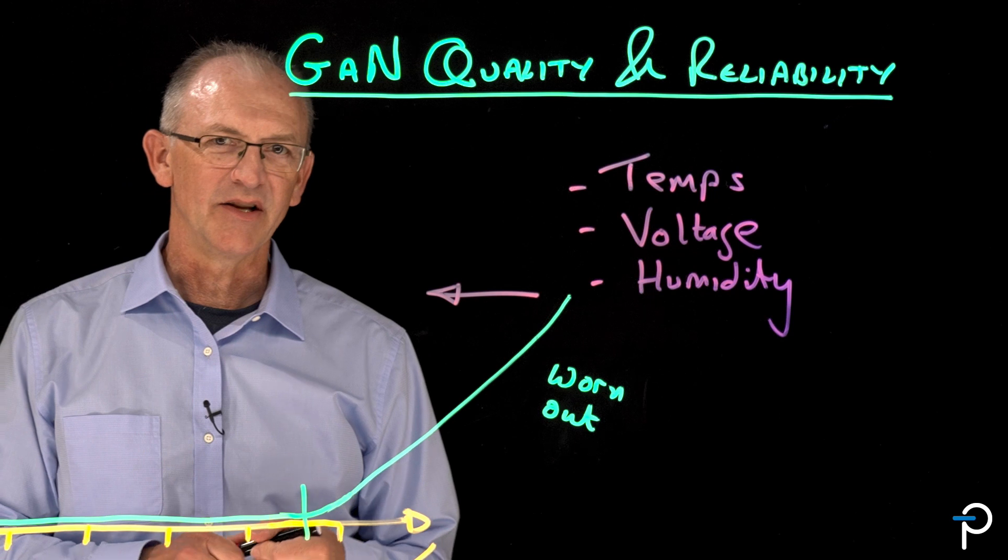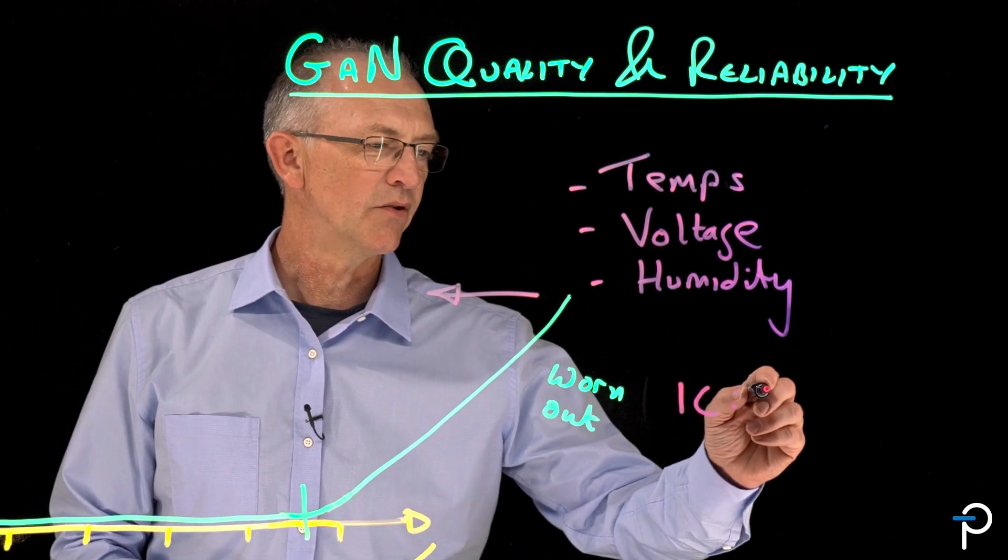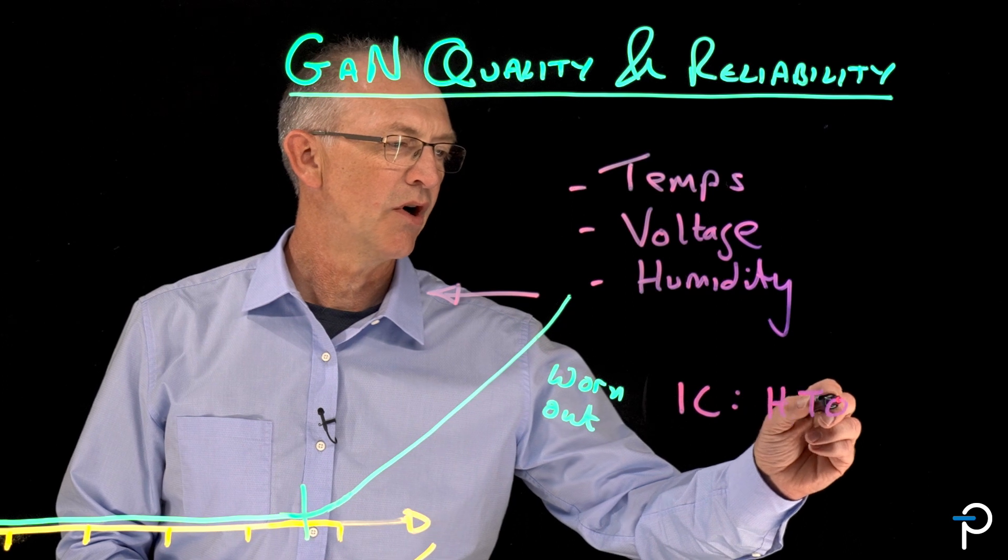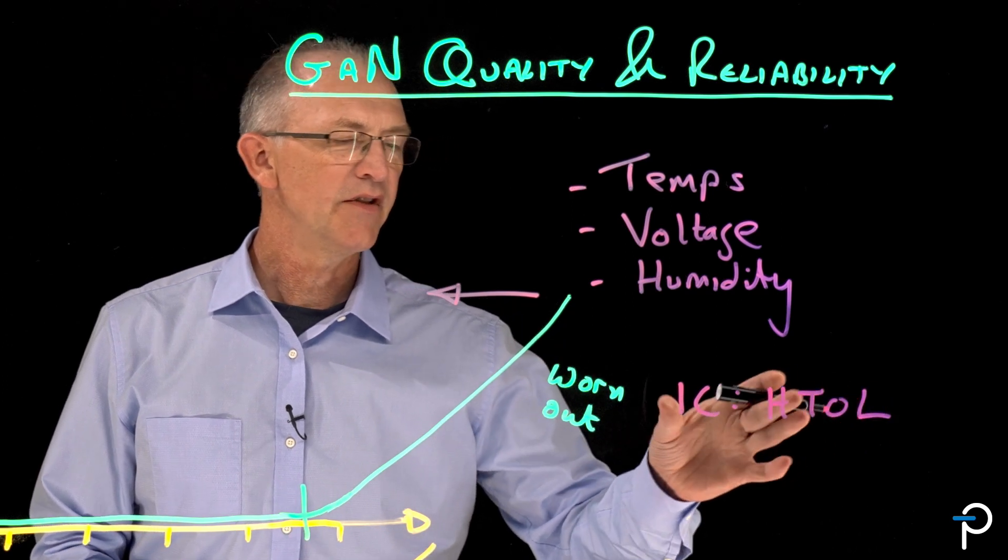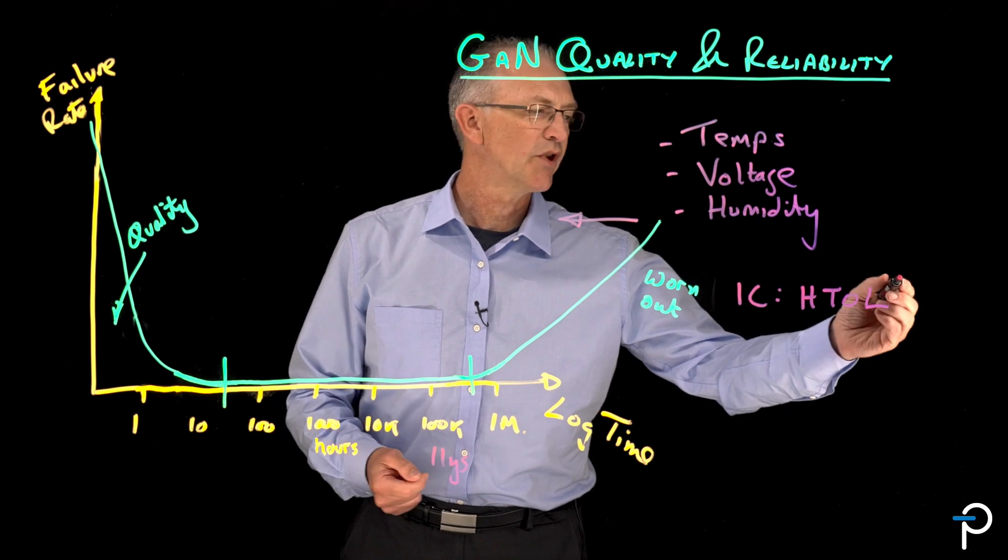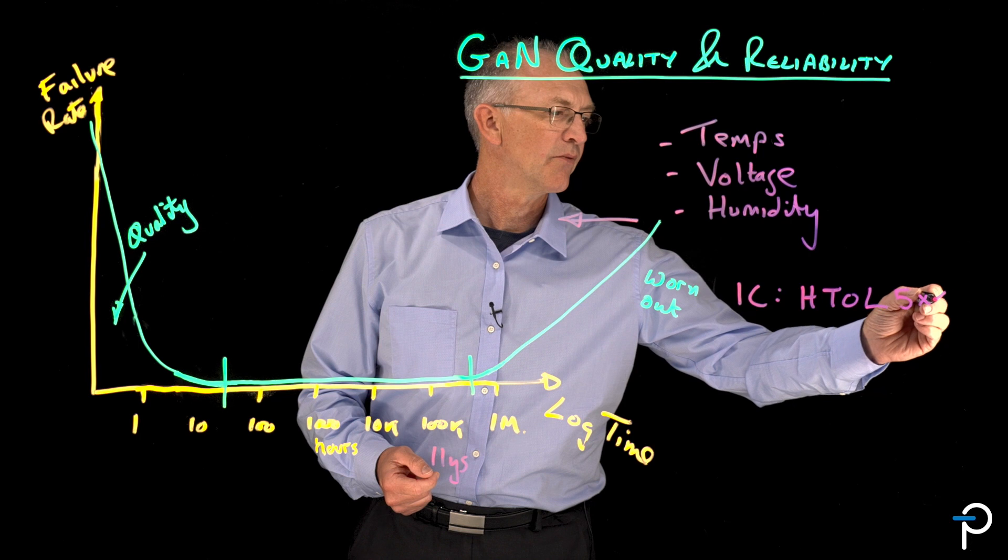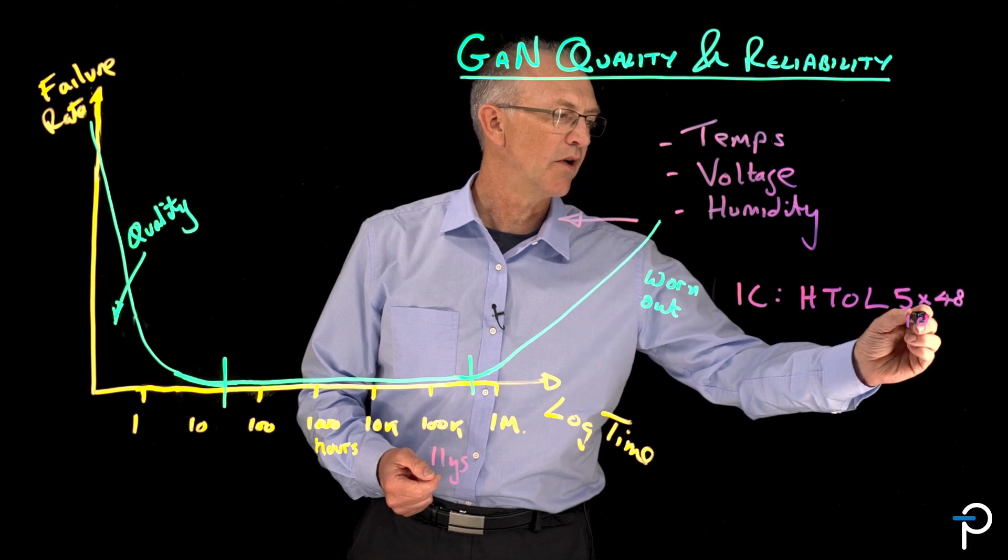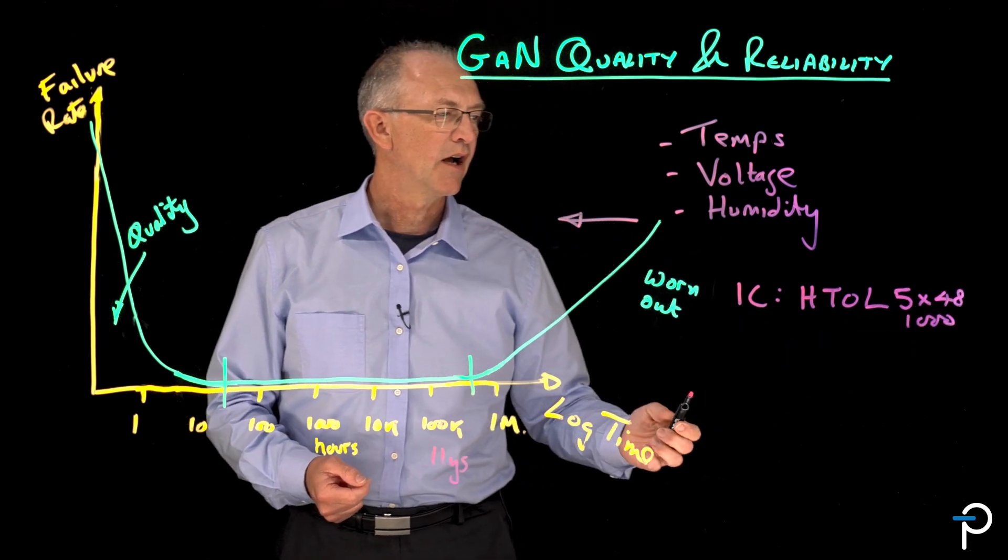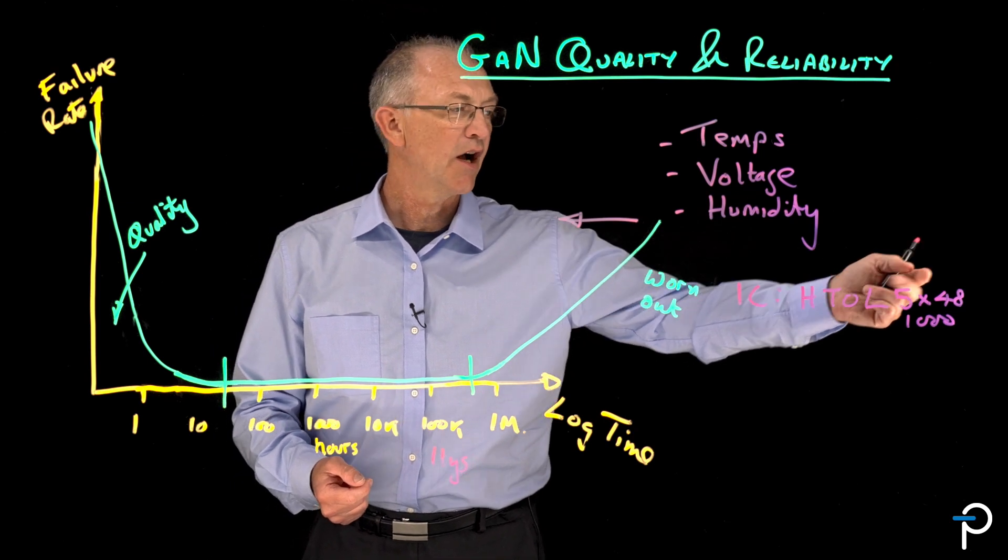So to accelerate time at the IC level, we run a test called High Temperature Op Life. And this test is designed to run a relatively small number of parts, but five lots times 48 parts for 1,000 hours. And that gives us a very good view of whether there is a process dependency and whether any one of these devices has been exercised into failure during a test.